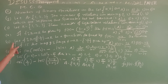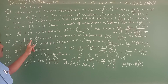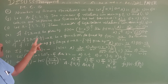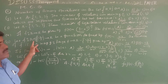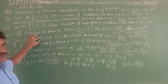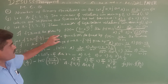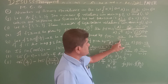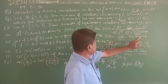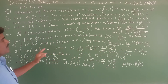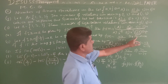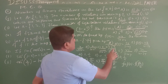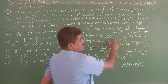Fifth one: Let f from ℝ minus {-4/3} to ℝ. The domain excludes -4/3 from real numbers. The function is defined by f(x) = 4x/(3x+4). We need to find the inverse function.